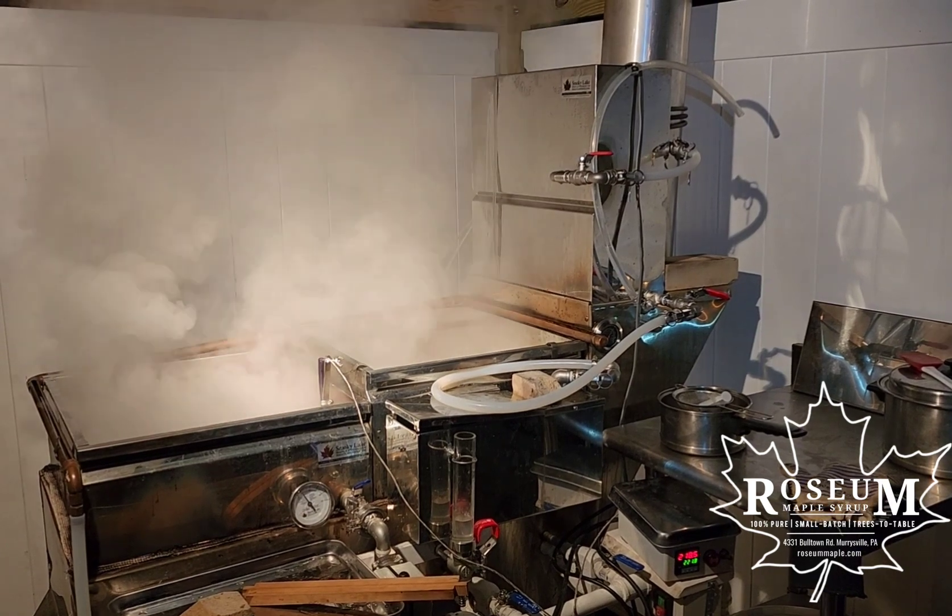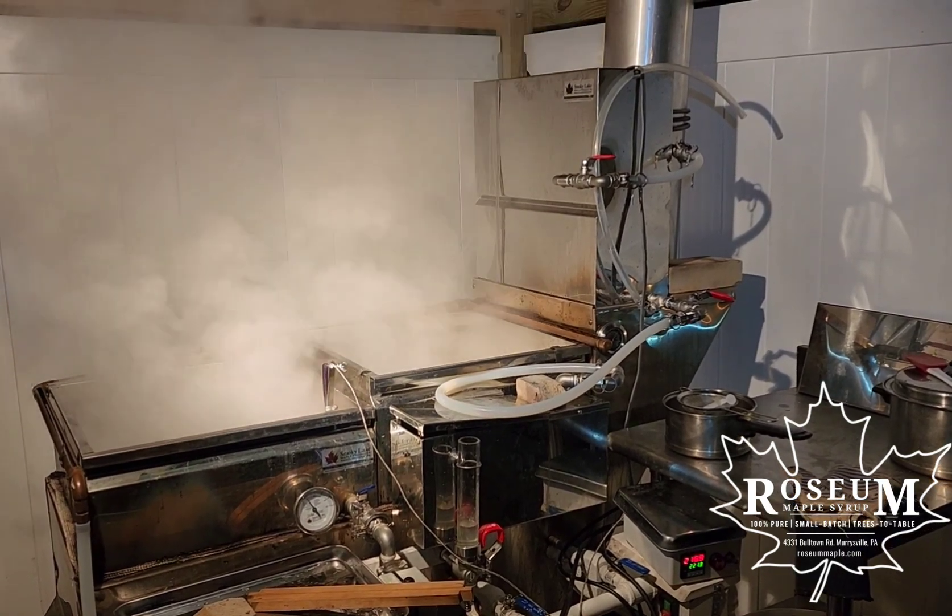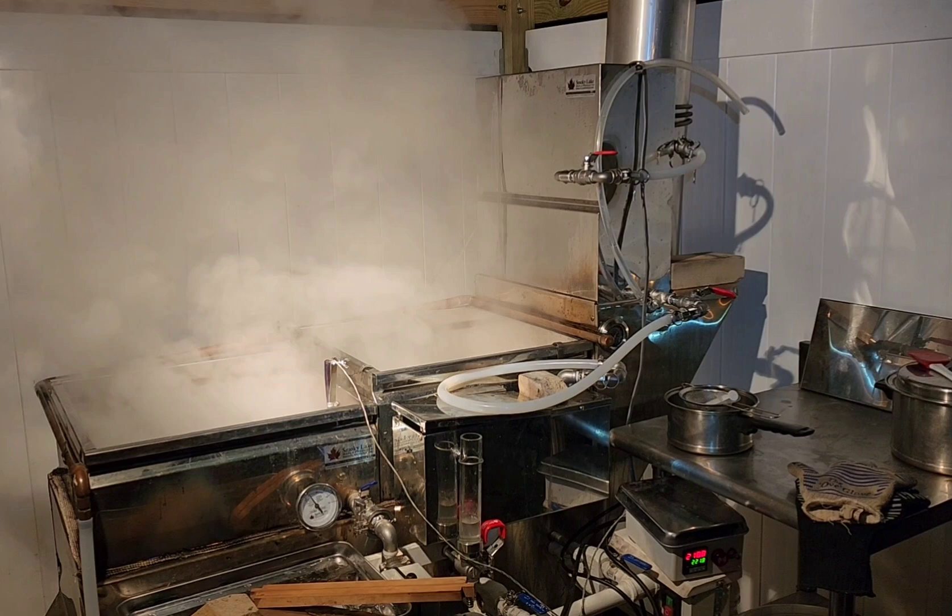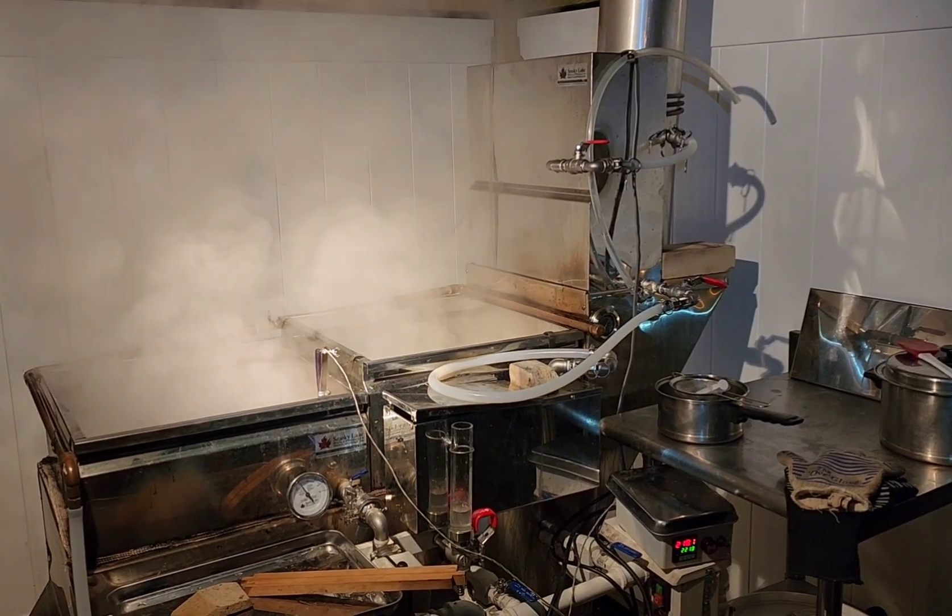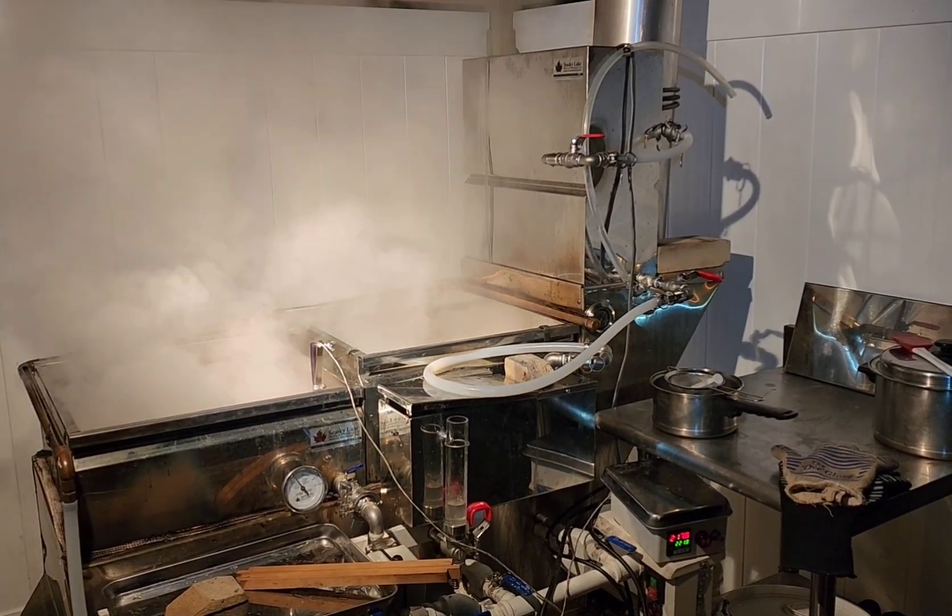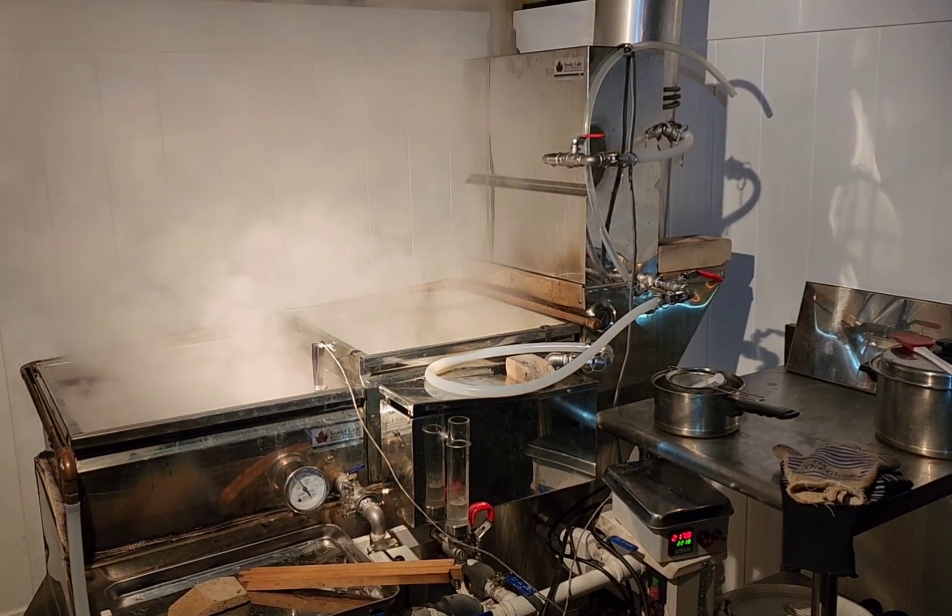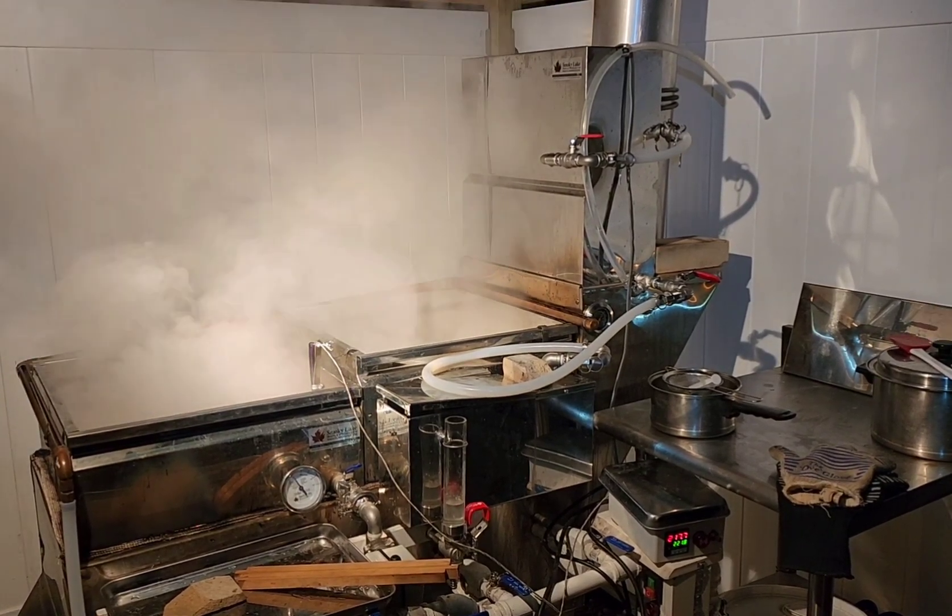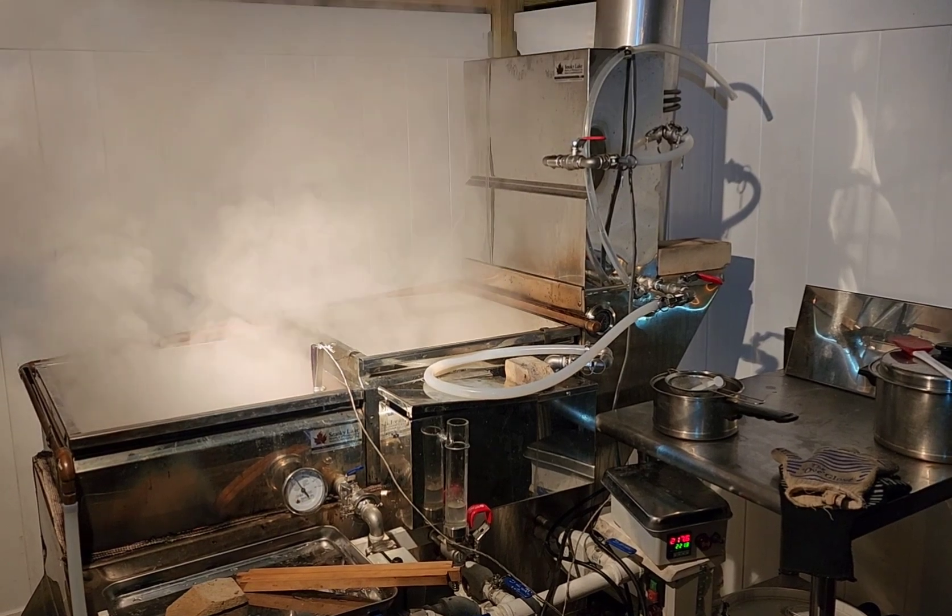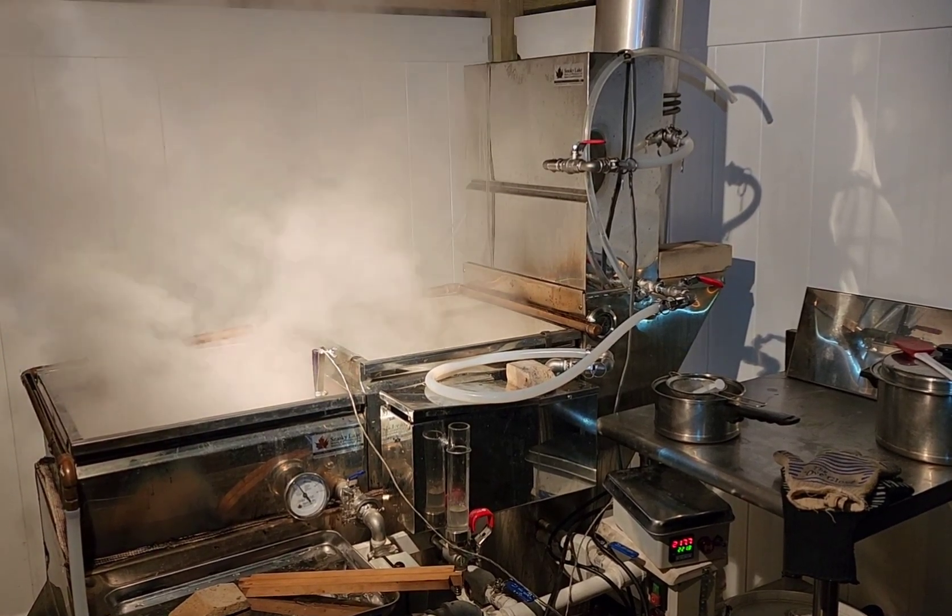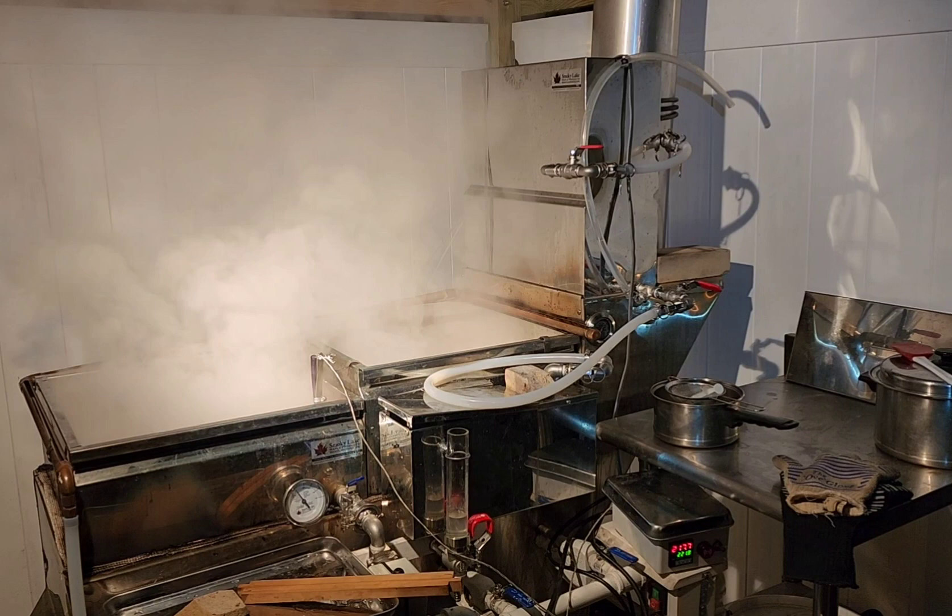Okay, we're boiling away. We're boiling on a Smokey Lake Dauntless Drop Flue pan set. The back pan is what's called a flue pan, and it has deep troughs in it that help transfer more heat into the sap and boil harder and evaporate quicker.